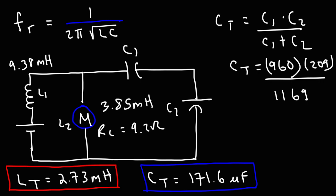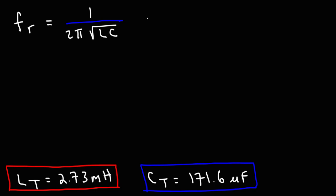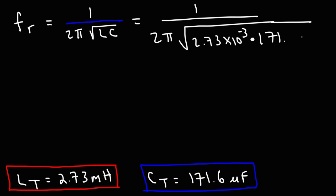Now that we have the net capacitance and the net inductance of the circuit, we can calculate the frequency that the circuit should resonate at. This is 1 over 2π times the square root of L, that's 2.73 millihenries, times C, 171.6 microfarads. I got a resonant frequency of 232.5 hertz.